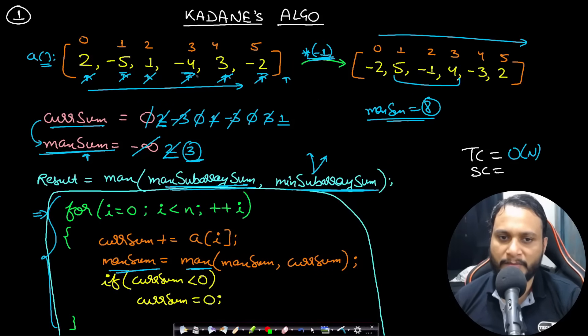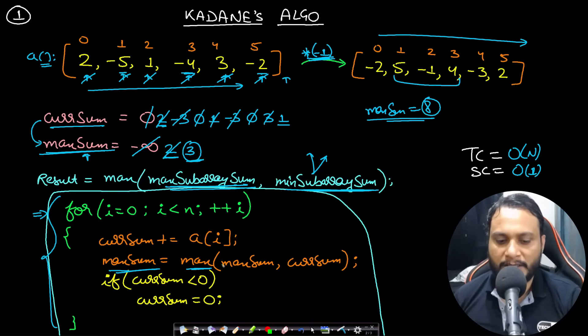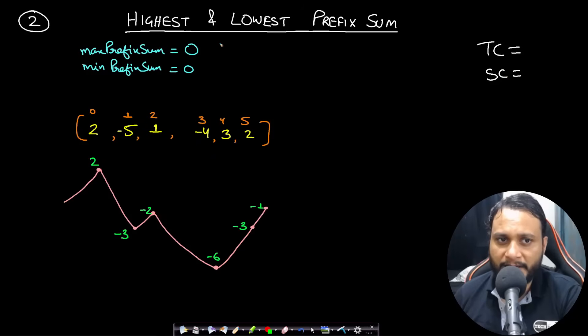The time complexity of this first approach is O(n) because we parse the entire array three times, and the space complexity is O(1). Now let's look at the second technique, which is based on tracking the highest and lowest prefix sum values.